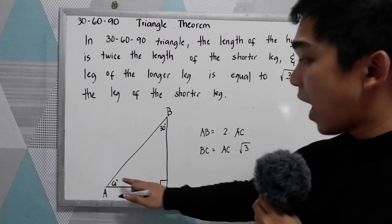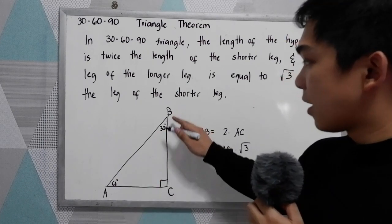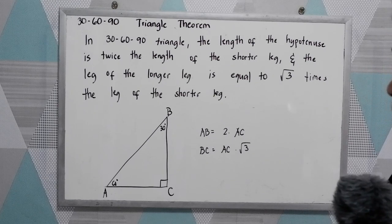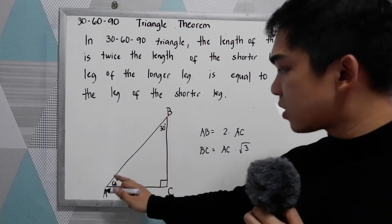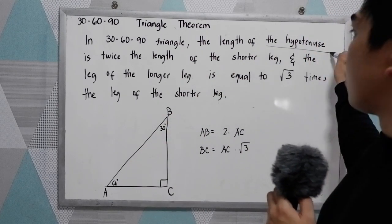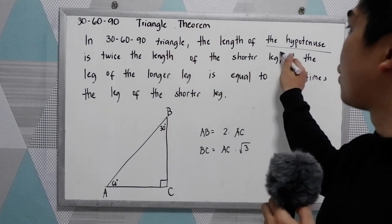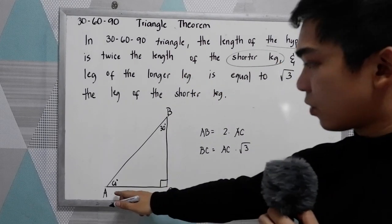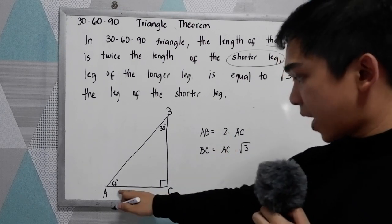And we have the hypotenuse and the other leg BC. Now the hypotenuse is twice the length of the shorter leg, so twice the leg of AC.